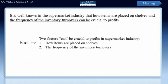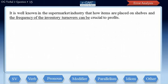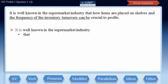Now let us evaluate the errors in this sentence by splitting it into clauses. The first clause is: 'it is well known in the supermarket industry' — here 'it' is the subject and 'is' is the verb. The presence of 'that' tells us we have another clause, but immediately after that we have 'how,' which marks the presence of yet another clause: 'how items are placed on shelves,' where 'items' is the subject and 'are placed' is the verb.